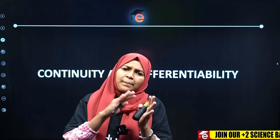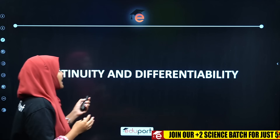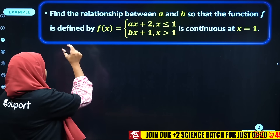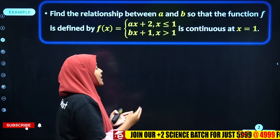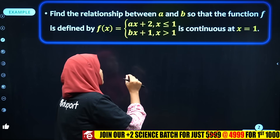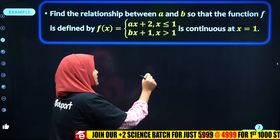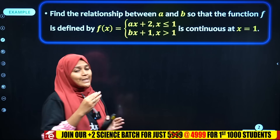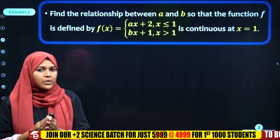We are going to discuss some problems. If you have a question in this pattern, we will discuss the functions and values. The first question is on continuity: Find the relationship between a and b so that the function f defined by f(x) = ax + 2 if x ≤ 1, and bx + 1 if x > 1, is continuous at x = 1.